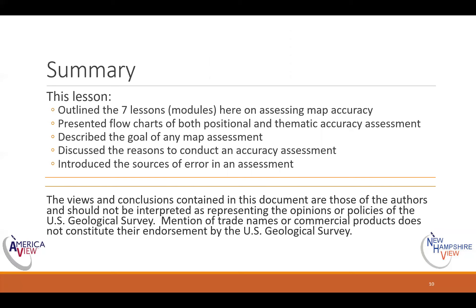So what did we learn in this lesson? There are going to be seven modules presented here, and this was just the first one. I showed you flowcharts to give you an overview of all the issues and considerations for positional and thematic accuracy assessment. I described the goals of a map accuracy assessment — balancing statistical validity with practical application. We talked about why you would do an accuracy assessment, with five reasons, the best being that you want to make decisions based on that information. Lastly, we looked at sources of error, and the more you can control those, the better. Next time, we're on to positional accuracy assessment. Thanks for joining me.